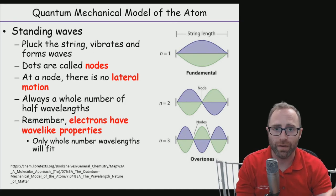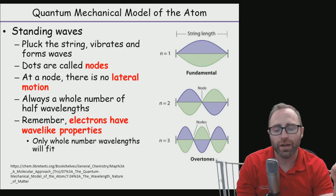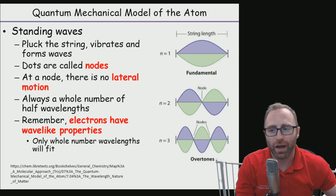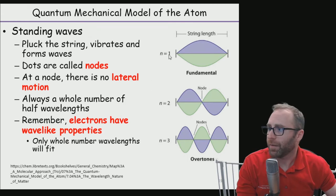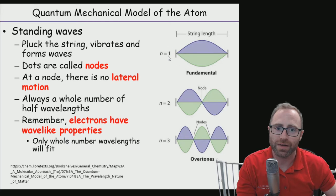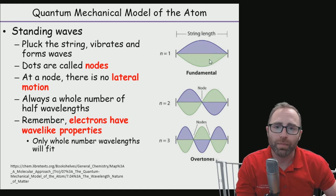Now a standing wave is a wave that is just continuing to oscillate back and forth. If we think about a wave, one side we can say this is where the string is attached, and on the other side the string is attached, and this distance would be the length of our string. If we pluck a string, it's going to vibrate and form a wave.